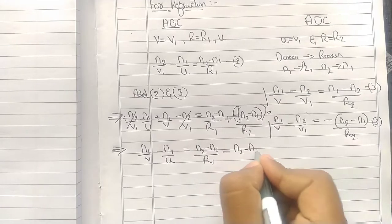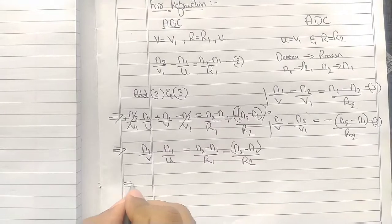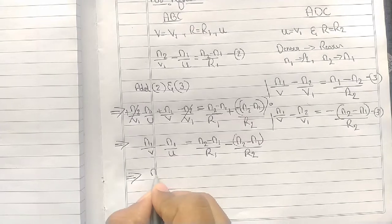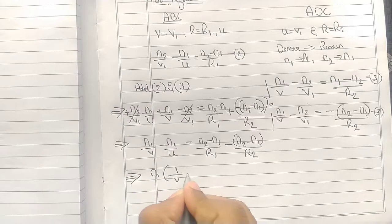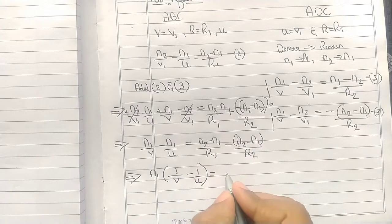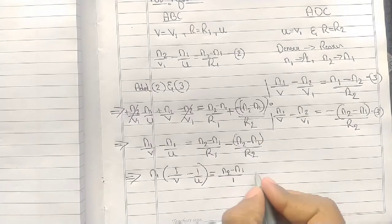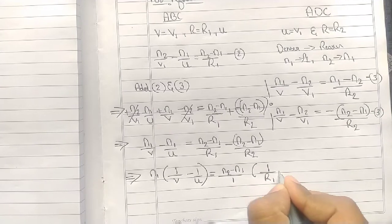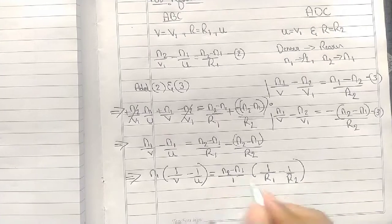Take N1 outside because it's common: 1 by V minus 1 by U equals N2 minus N1 is common on both sides, take outside: N2 minus N1 times 1 by R1 minus 1 by R2. We almost got our formula.